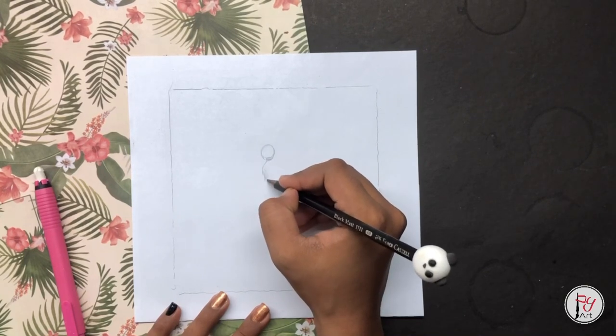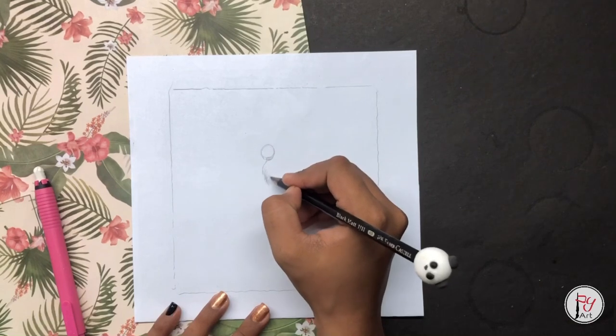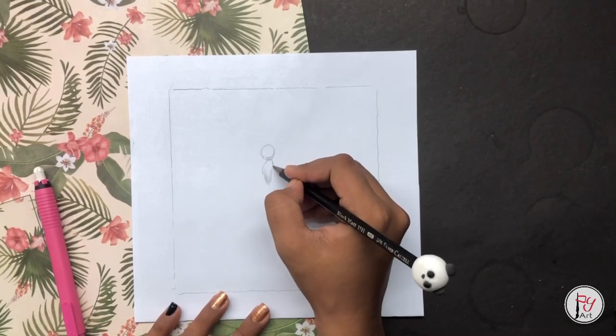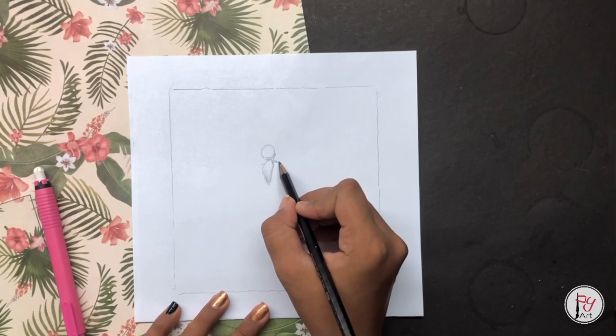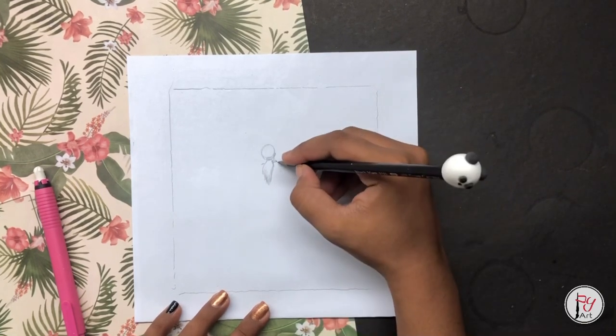First, we are going to draw a reference on paper. We are going to draw on the glass directly. That is why we are going to draw a reference on paper first. It will be easier to draw.